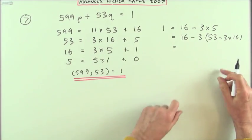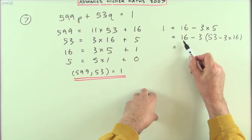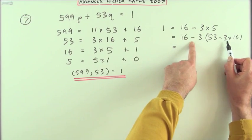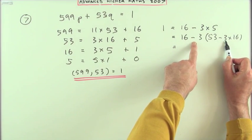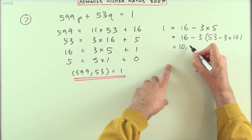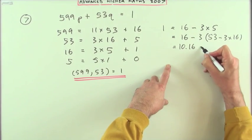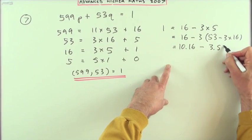So how many 16's have I got here then? I've got one of them here. Take away 3 times negative 3 is plus another 9. So I've got 10 lots of 16. I'll just use the dot notation. Minus 3 lots of 53.